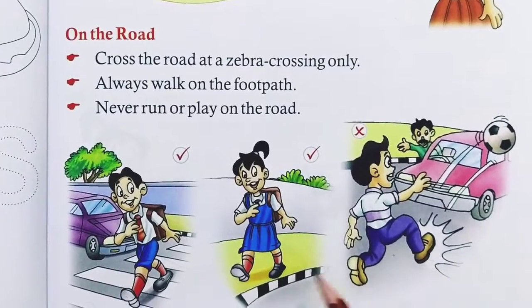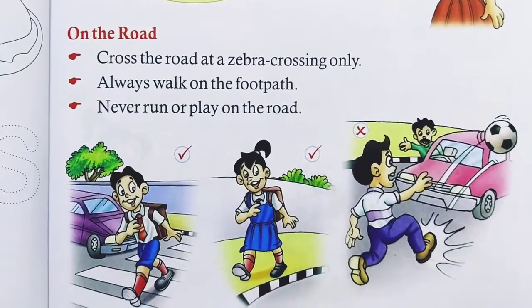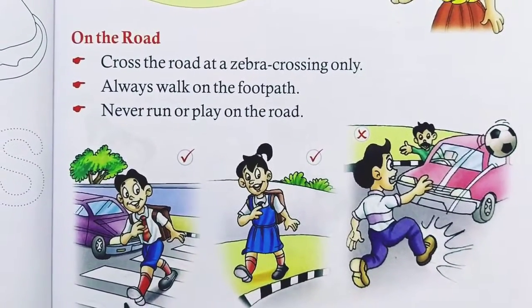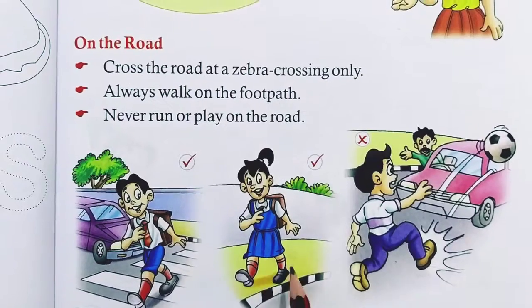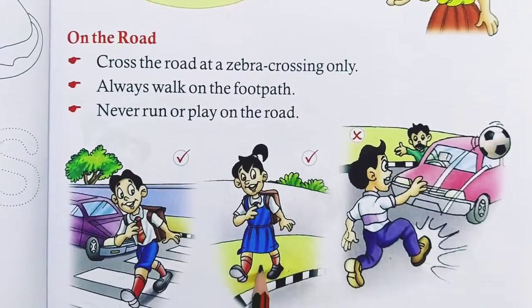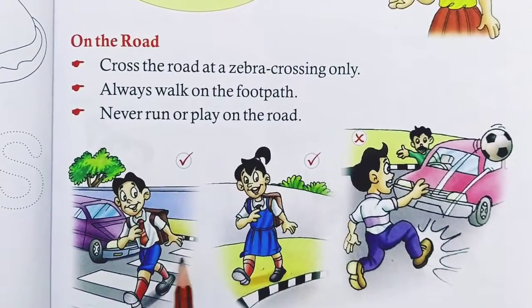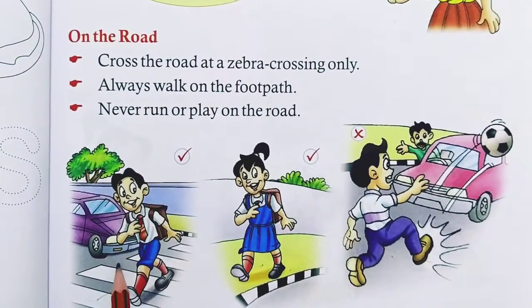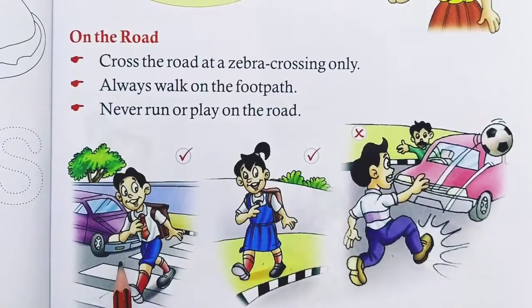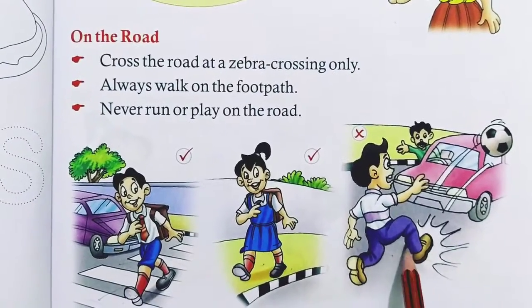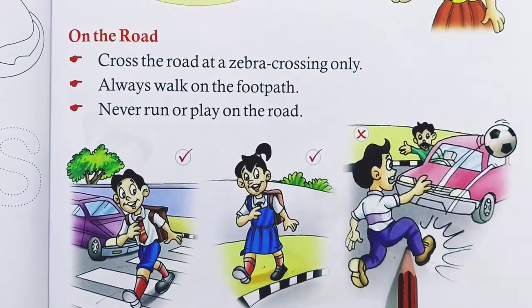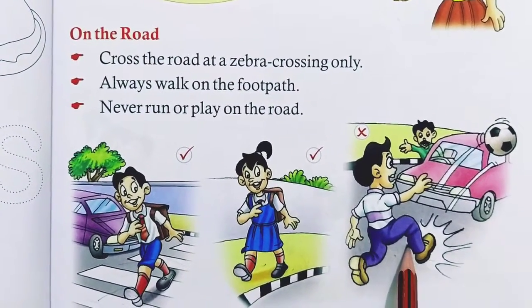Tell us what they are doing — which is good and which is not. Walking on a footpath is right. Crossing at the zebra crossing is right. But running or playing on the road — is that safe? No!